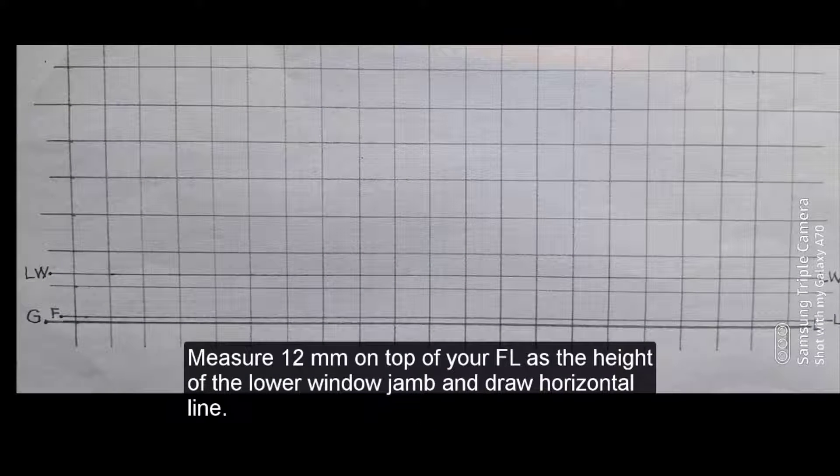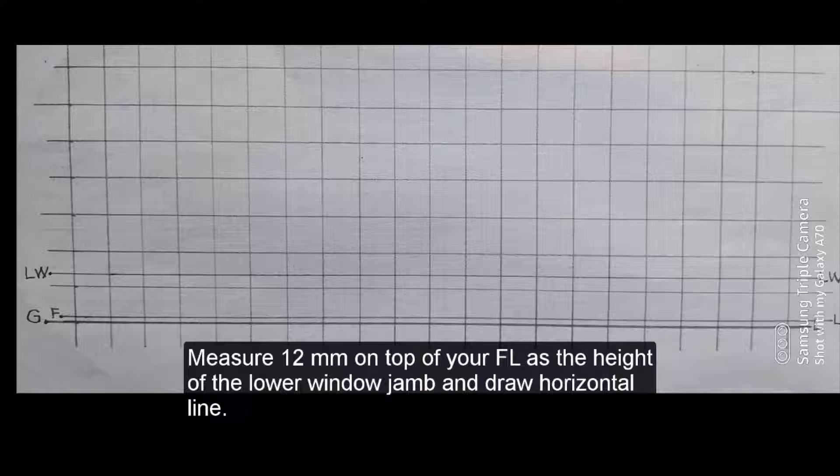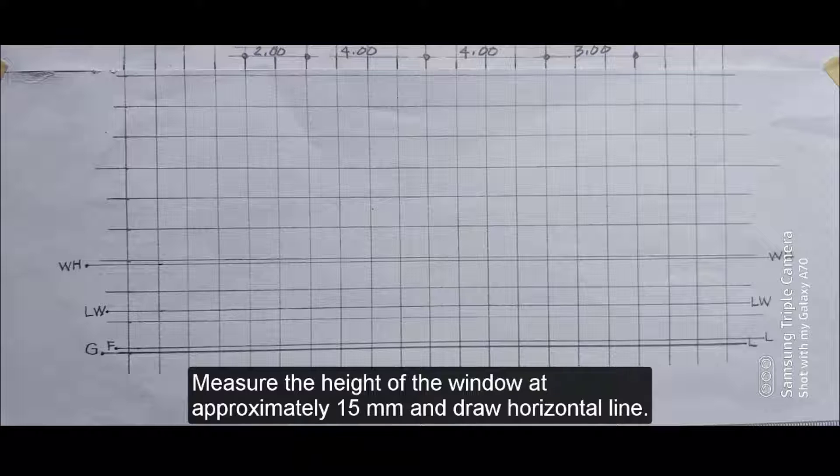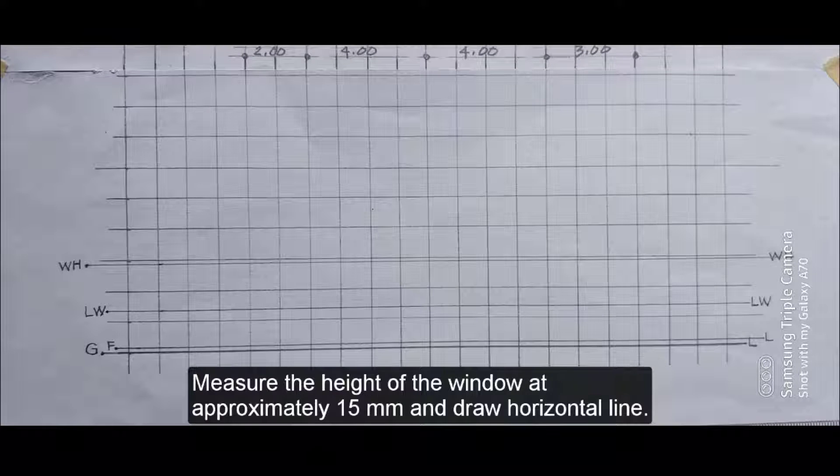Measure 12 mm or 1 cm and 2 mm on top of your floor line as the height of the lower window jump and draw a horizontal line. Measure the height of the window at approximately 15 mm and draw a horizontal line.